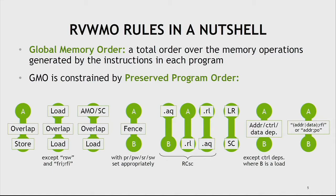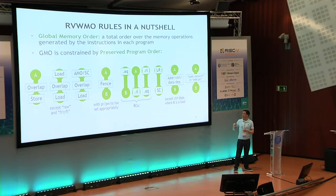There's a rule about ordering load-reserved with a subsequent paired store-conditional. One of the big missing features in the original spec that we made sure to add is syntactic address, control, and data dependencies — where if you load a value from memory, do some arithmetic on it, and then use it as either the address or data value of a subsequent memory operation, or feed it into a branch that determines whether another memory operation gets executed, these are used as a somewhat lightweight form of synchronization in different memory models. This is a standard thing we wanted to include, again, for the sake of compatibility.